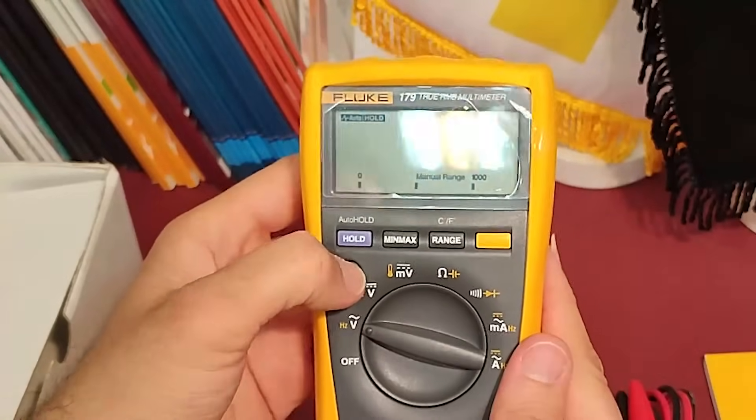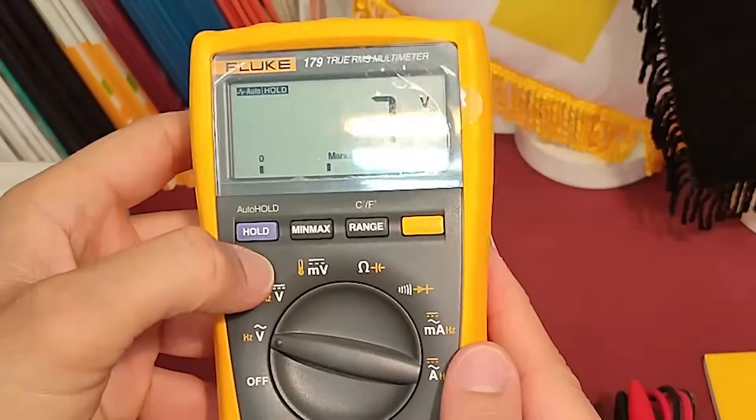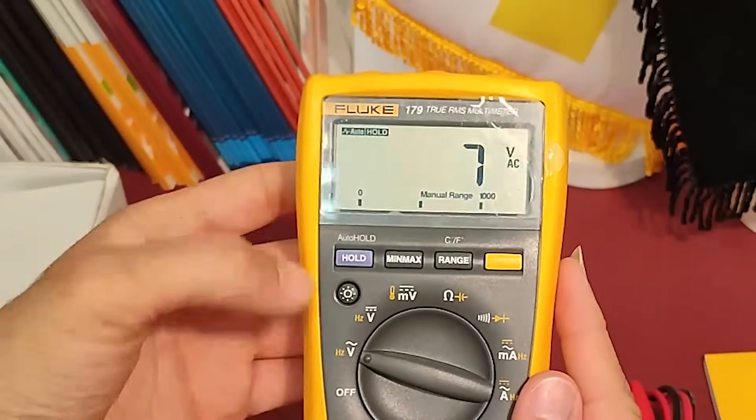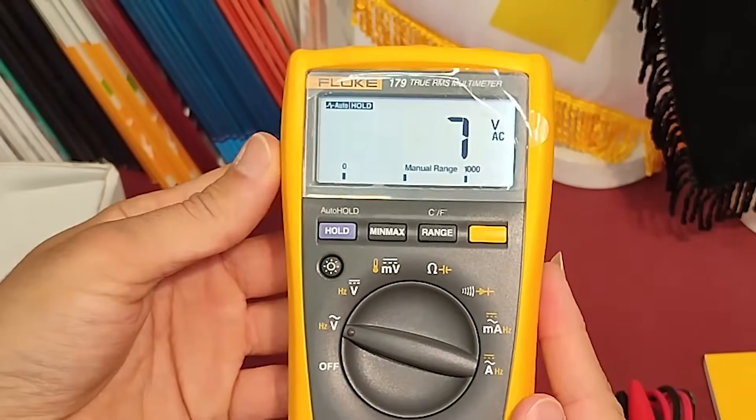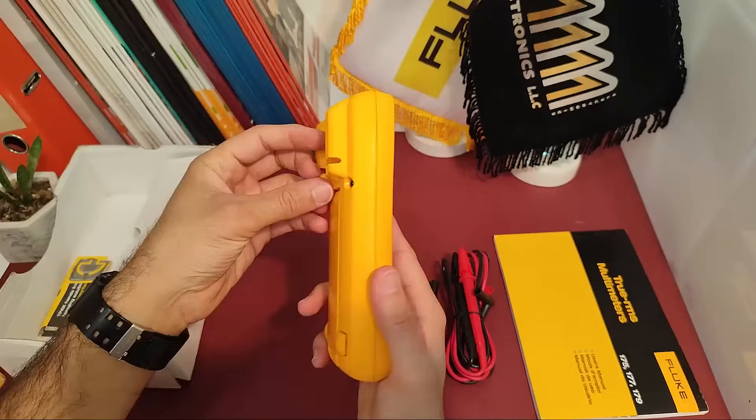The FLOG 179 multimeter comes with a backlight display which makes it easy to read the measurements even in low light conditions. Simply press the backlight button to turn on the backlight.